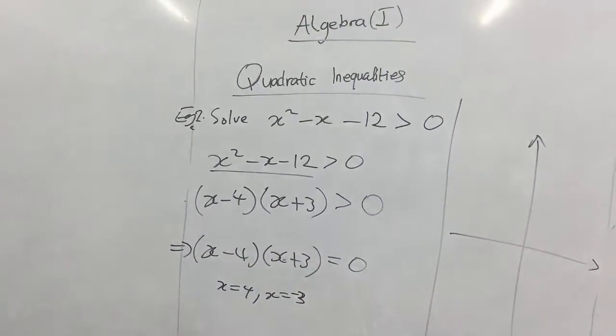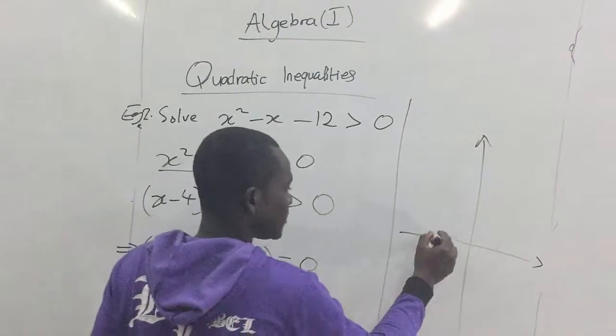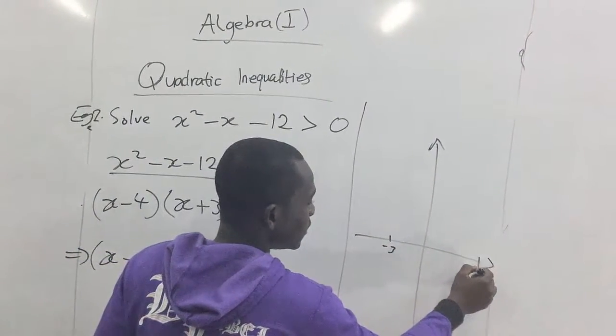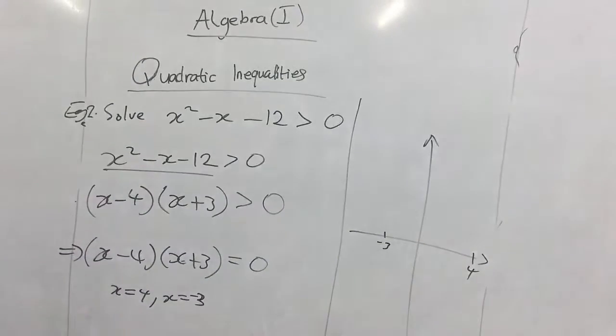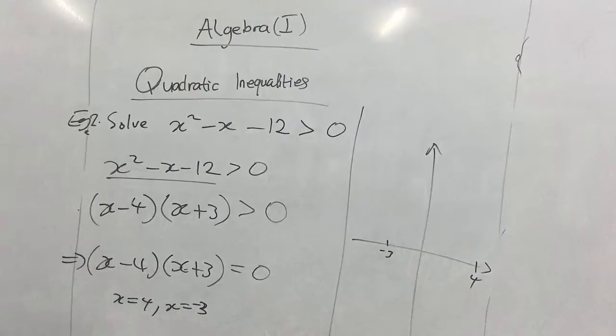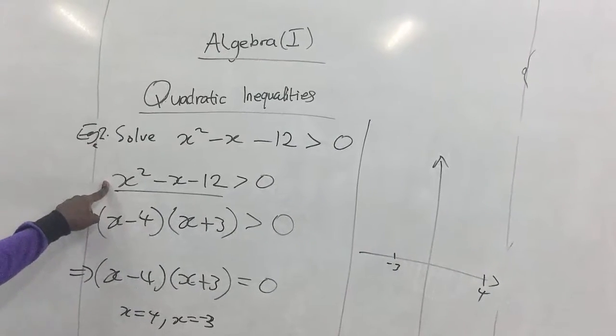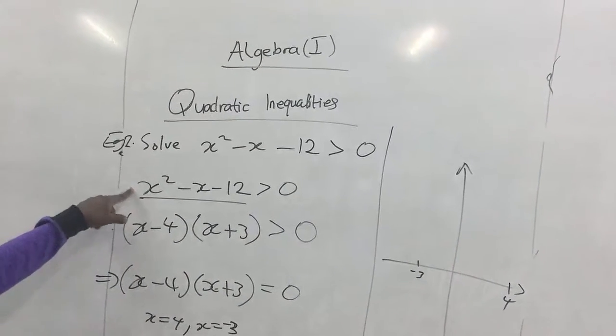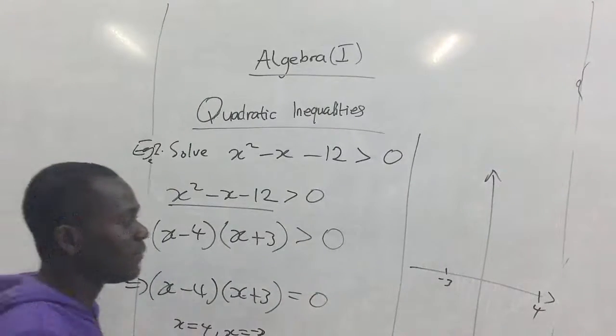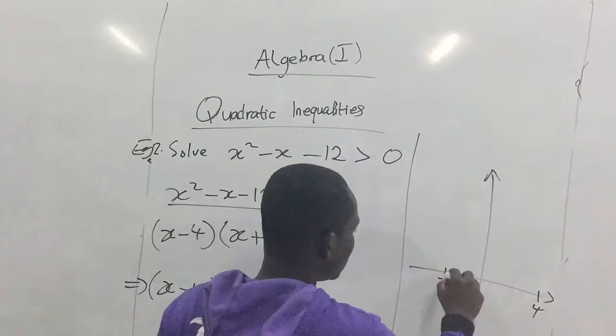Okay, so we locate our roots, that's negative three and four on our graph. Now how would this graph look like? We consider the coefficient of the x squared which is positive, so we have a minimum curve which goes this way.